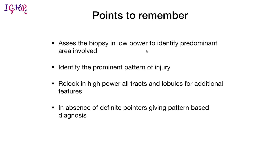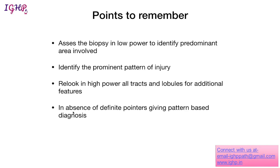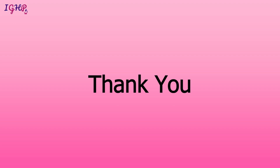To summarize the key points: assess the biopsy first at low power to identify the predominant area involved — whether it is lobule-predominant or portal-predominant pathology. Once the predominant area is identified, determine the pattern of injury — steatotic, hepatitic, or cholestatic. Then examine at high power all portal tracts and lobules for any additional features. In the absence of definitive etiological pointers on biopsy, the diagnosis can still be given based on the pattern — for example, if there are no etiological pointers for cholestasis, one can report it simply as showing a cholestatic pattern.